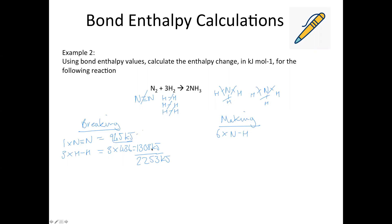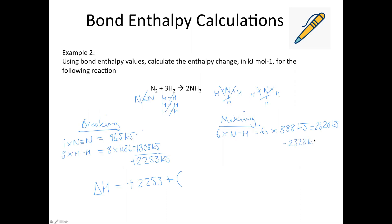So then for the making, that would be 6 times 388, which comes out as 2,328 kilojoules. For the overall enthalpy change, we've got the endothermic breaking — plus 2,253 — add the exothermic making — negative 2,328. So then that becomes 2,253 minus 2,328. Put that in the calculator and that comes out as negative 75 kilojoules per mole.